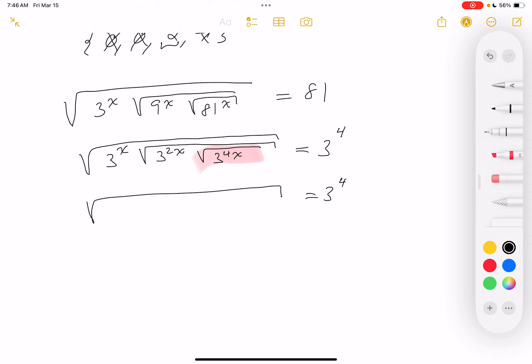This is 3 to the 4th power. This is 3 to the x. The root of this is 3 to the 2x, and the root of 3 to the 4x is going to be 3 to the 2x.